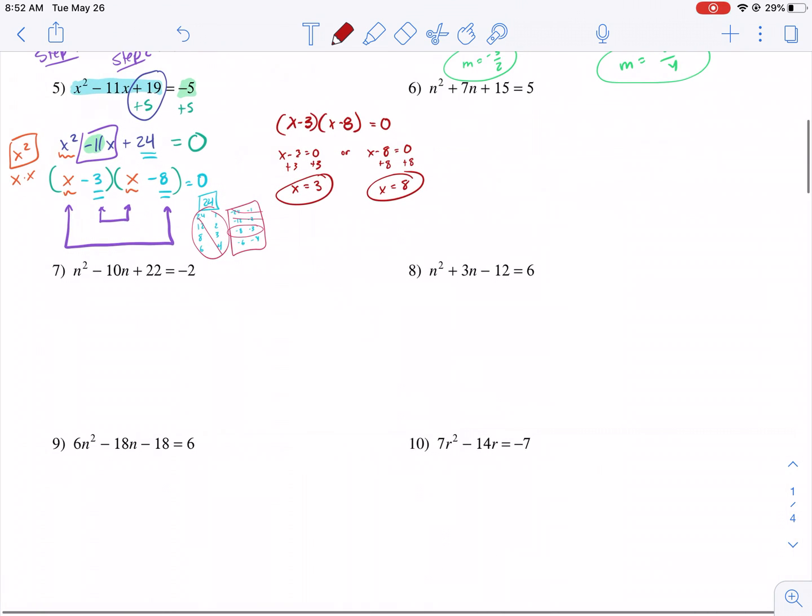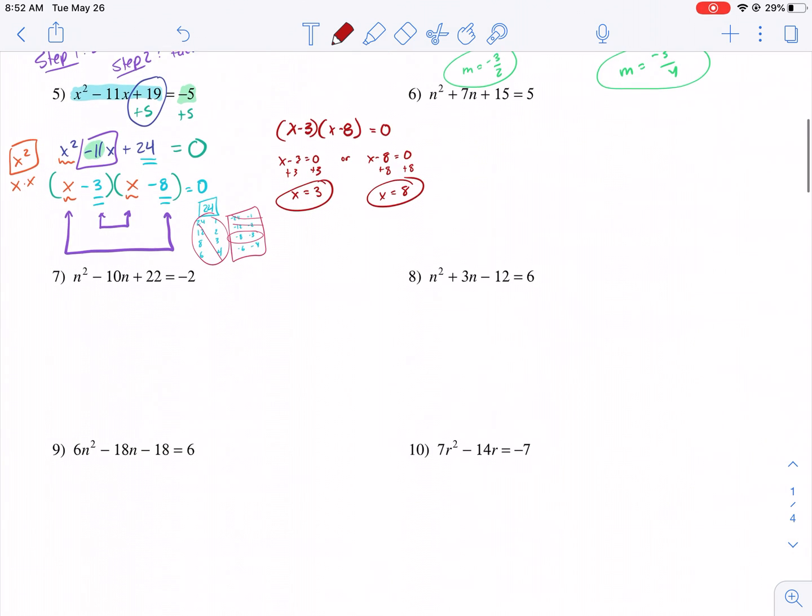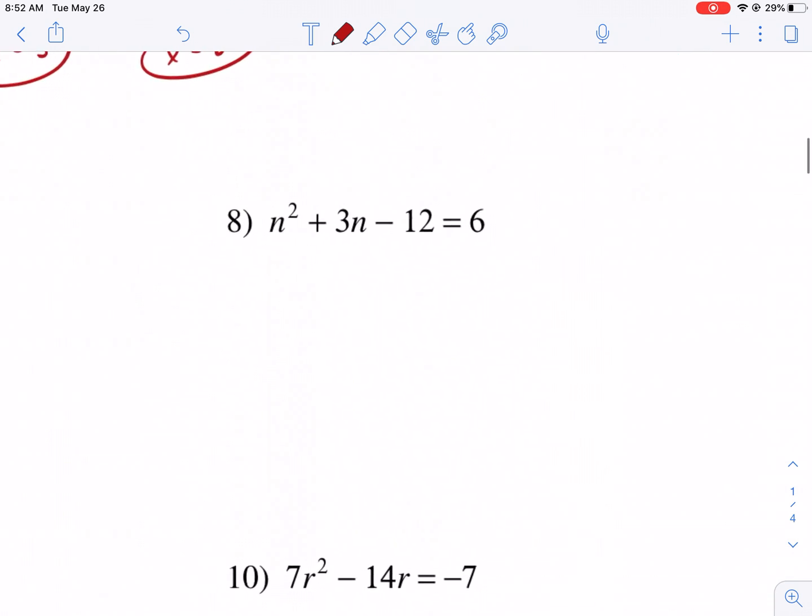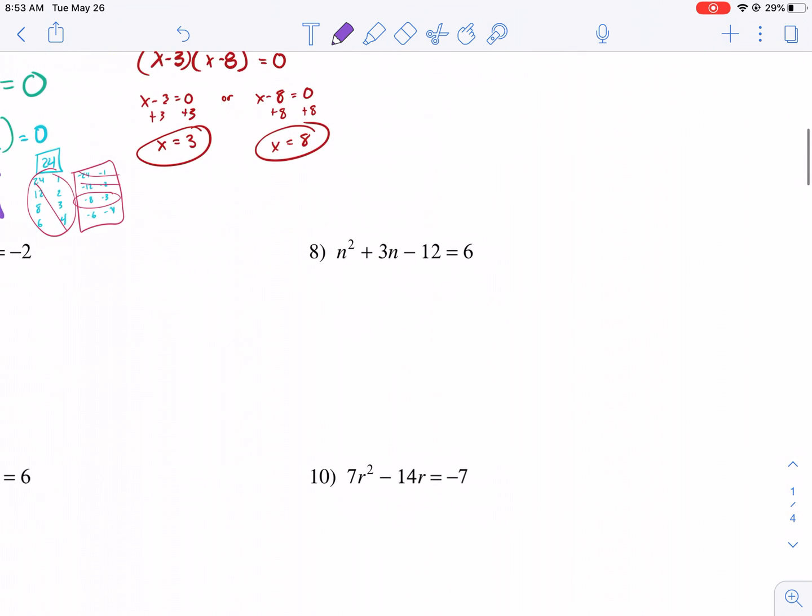Let's do maybe a couple more. So let's go ahead and do number 8, I suppose. As you can see here, Step 3, that's the last thing we did. Step 3, we solved. So we want a value. x equals a number, and there should be 2, or our variable. In this case, it's n. So our step 1 for number 8, we want this equal to 0. So we're going to move that over by subtracting 6. We get n squared plus 3n minus 18 equals 0. Now we're ready to rock and roll.